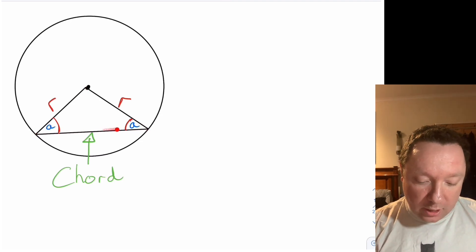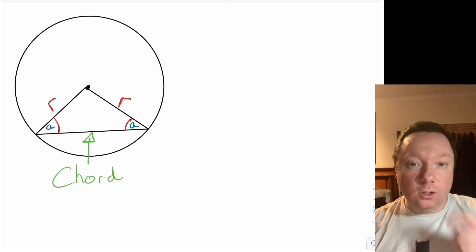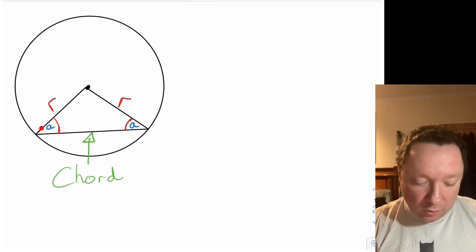Then you get an isosceles triangle because you've got two sides which are the same size. In an isosceles triangle, if you've got two sides the same size you've also got two angles the same size, which means we can solve problems involving that.